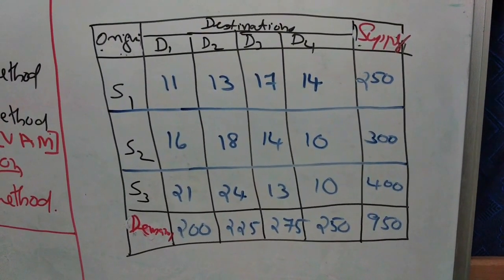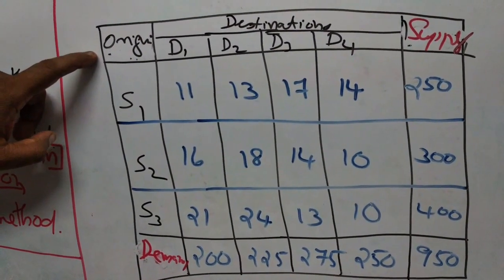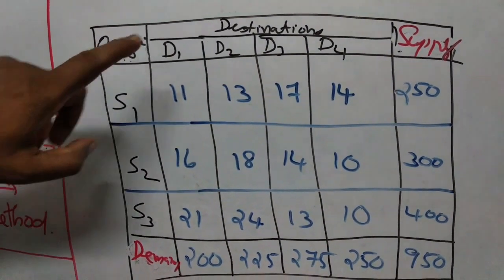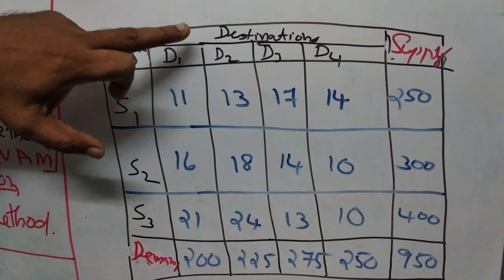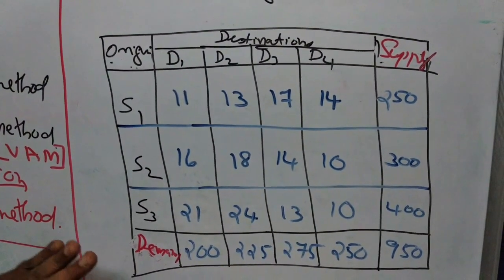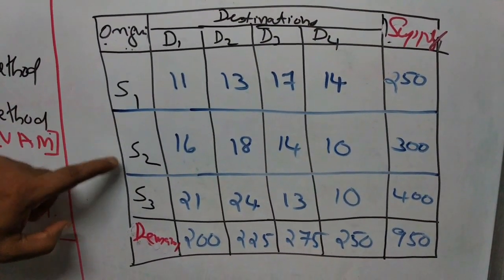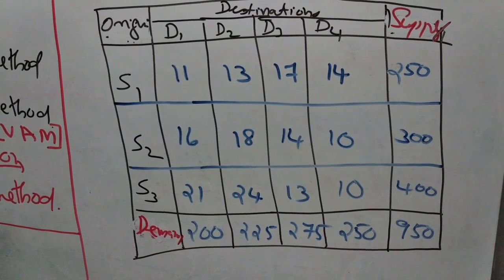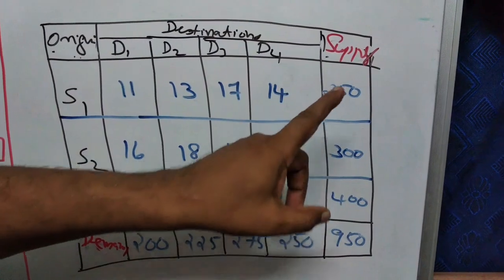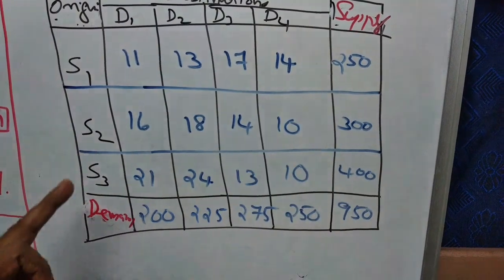I am illustrating a transportation table. The components are: where the items are available, termed as origin or production centers; and where the items are demanded, called destinations. In this illustration, there are three units of production: S1, S2, S3, termed as origin or production centers. The total availability — supply — is 250 at the first center, 300 at the second center, and 400 at the third center.